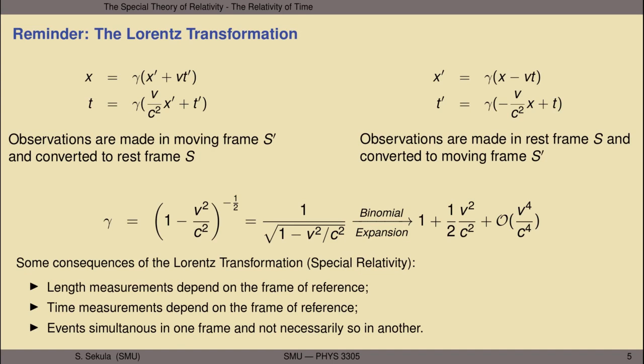Let's begin by reminding ourselves one more time about the Lorentz transformation. If we make observations in a frame S-prime that we consider to be moving and want to convert them into observations in a frame S we consider to be at rest, the equations in the top left of the slide will do just fine. If we have observations in the rest frame S and want to convert them into the moving frame, we change x to x-prime, t to t-prime, and v to negative v.